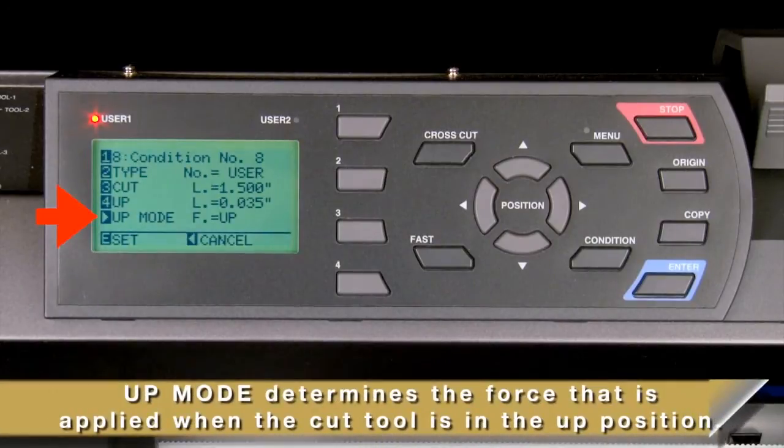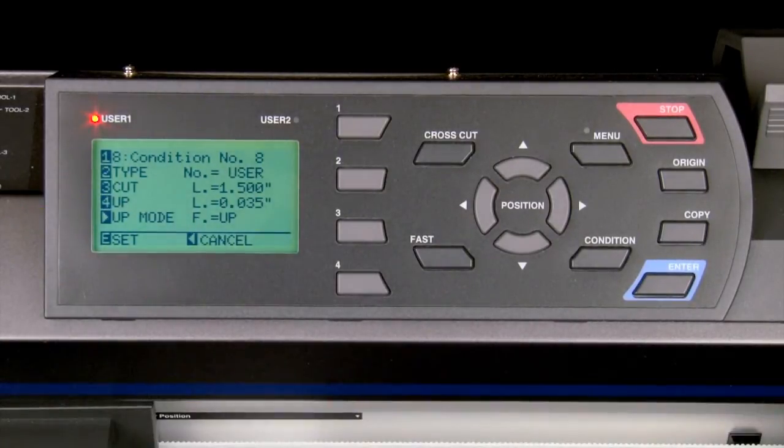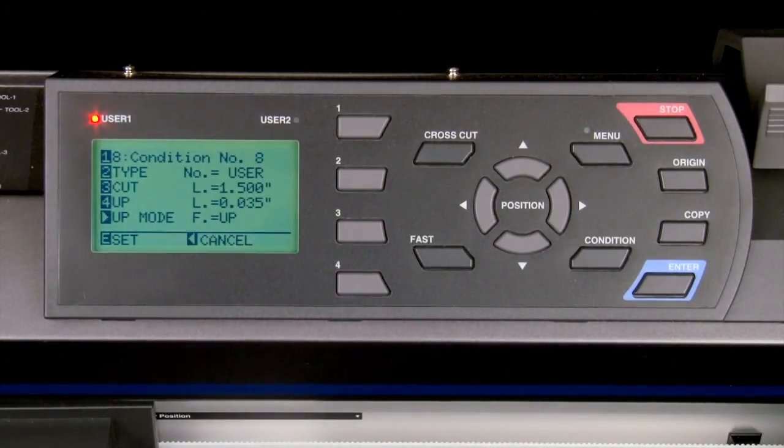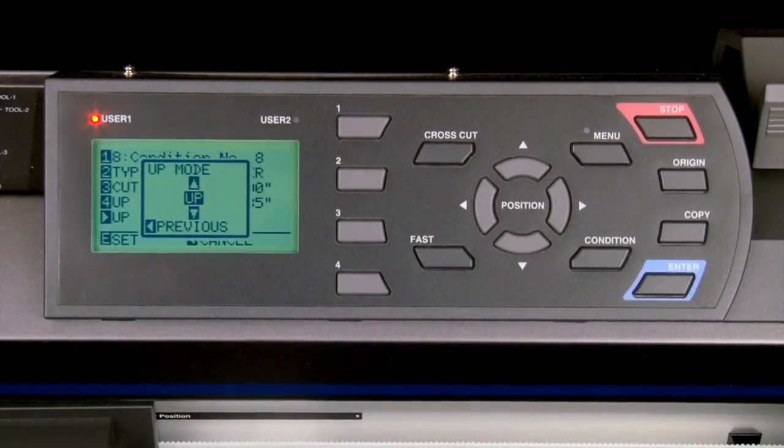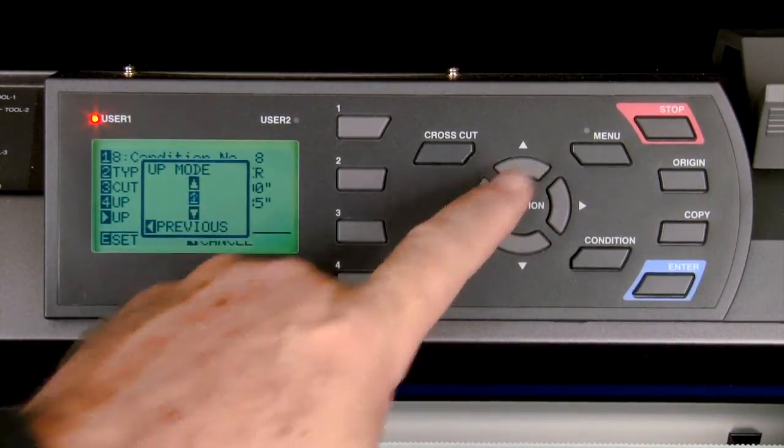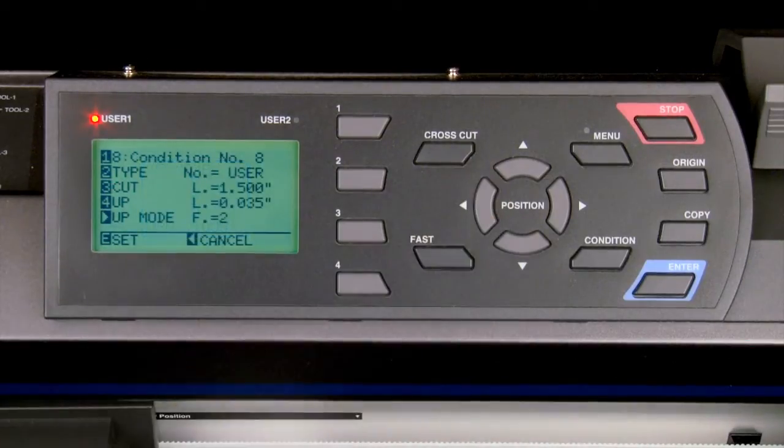Up mode determines the force that is applied when the cut tool is in the up position. This is good to remember because when the value is set to up, the blade will lift completely out of the material. We can set this value to about 2 by pressing the left arrow key and then changing the value. What is convenient is that when the up mode is set to a value other than up, it will actually speed up the overall throughput of the cutting. Pressing the left arrow key will exit and pressing enter will accept the values.